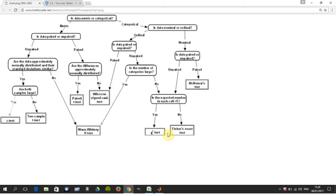So we have here from this website a diagram of which test to use. It's categorical, it's nominal, it's unpaired and the expected number in each cell is less than five so we're using Fisher's exact test.